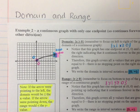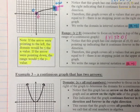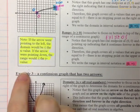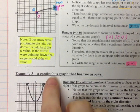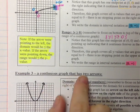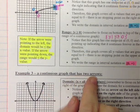This video is on domain and range. I'm going to be doing example 3 — a continuous graph that has two arrows.